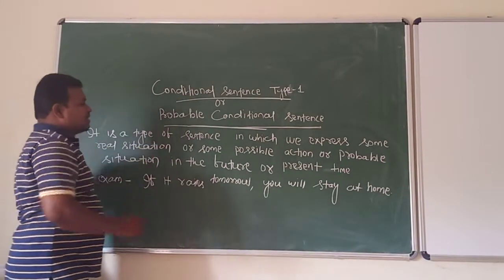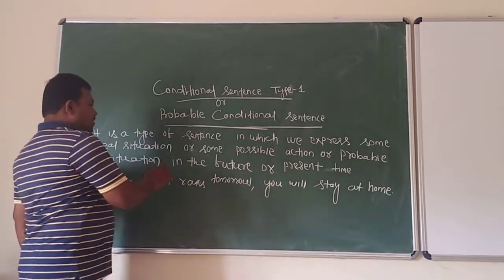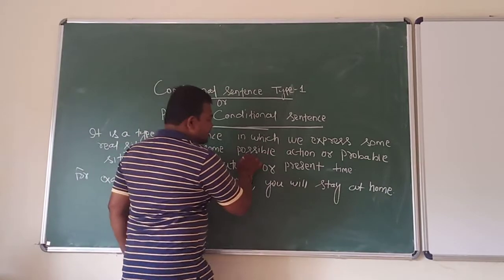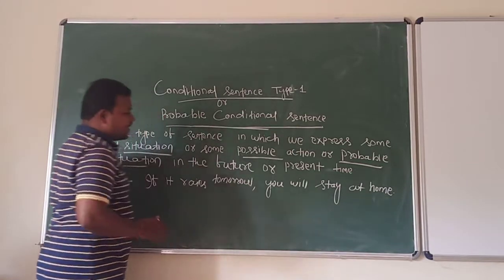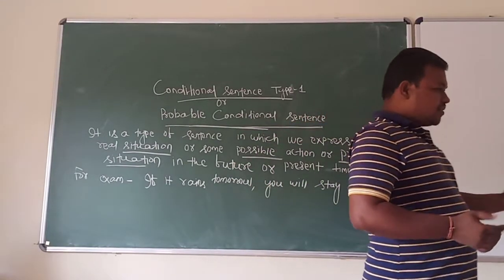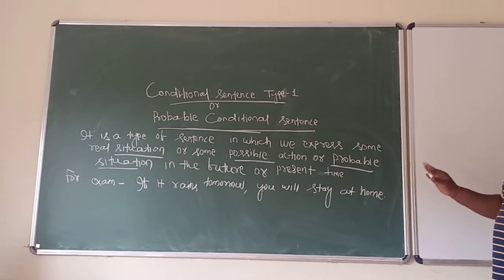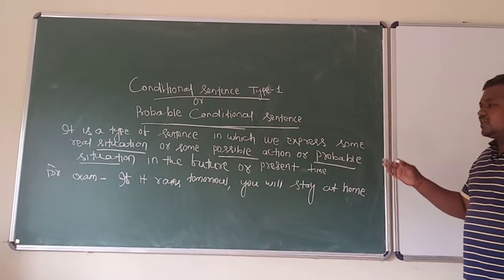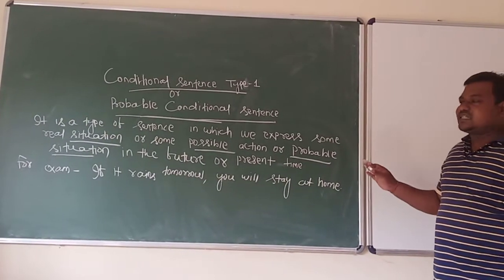It is a type of sentence in which we express some real situation, some possible action, or probable situation in the future or present time. That means, when we express some action for the future and there is some possibility or probability for the result of the condition, we use this type of conditional sentence. That is why it is called a probable conditional sentence.